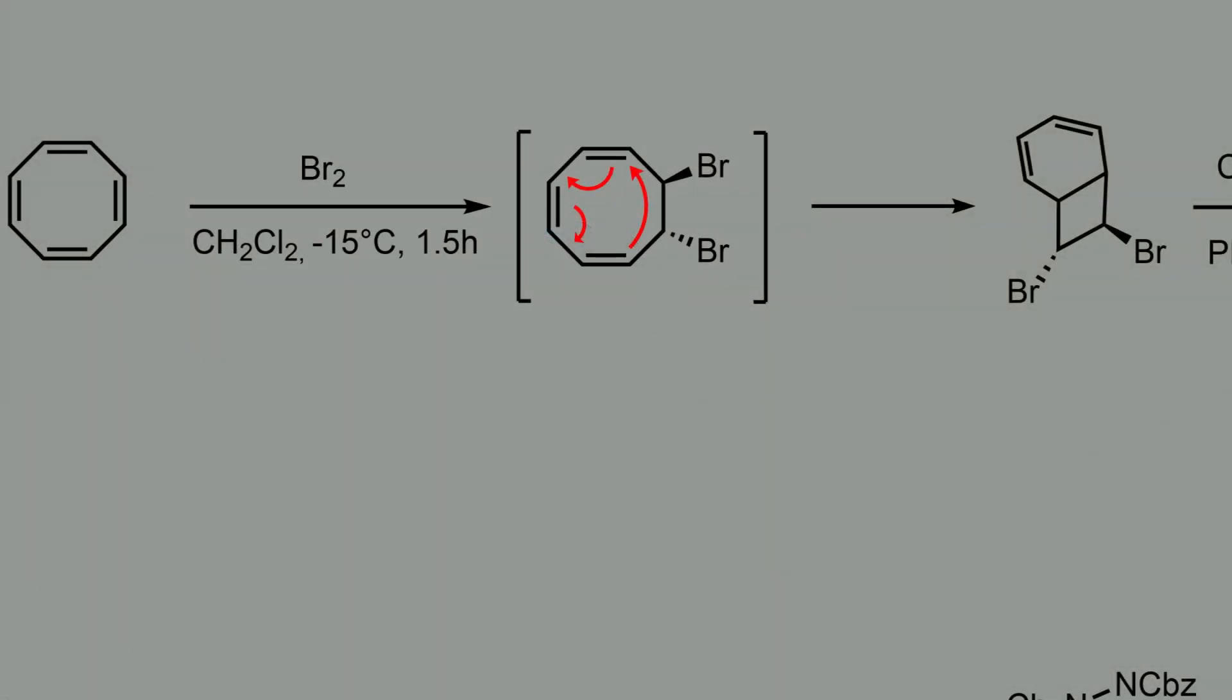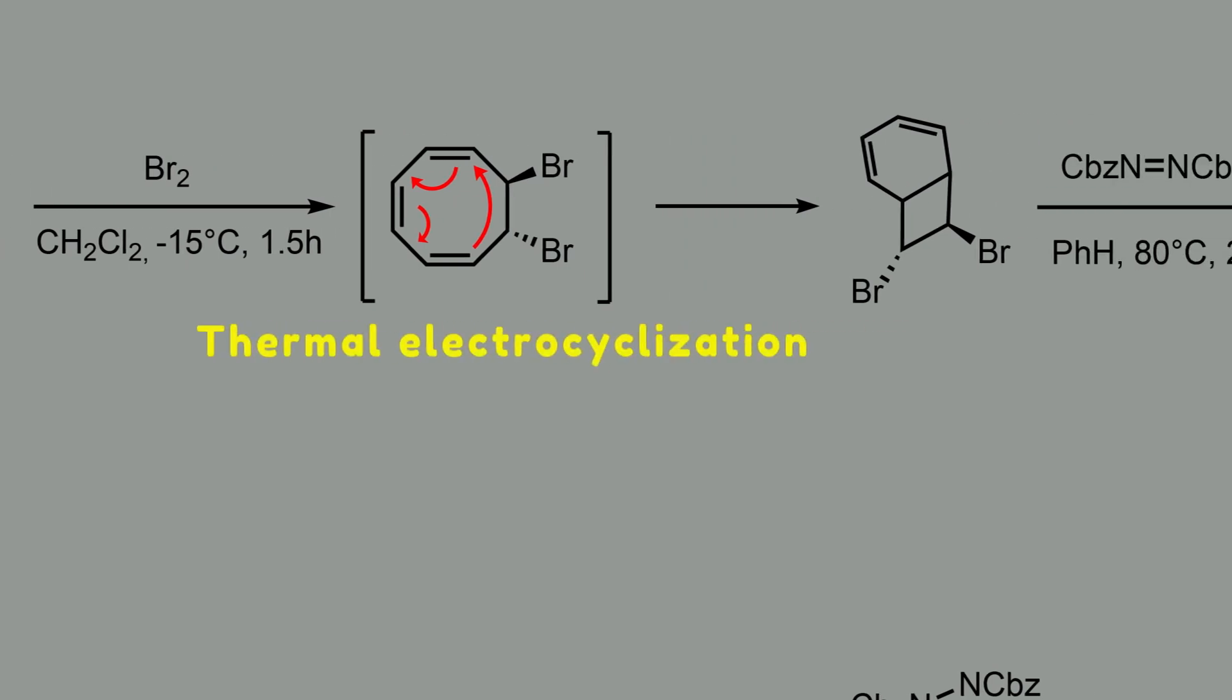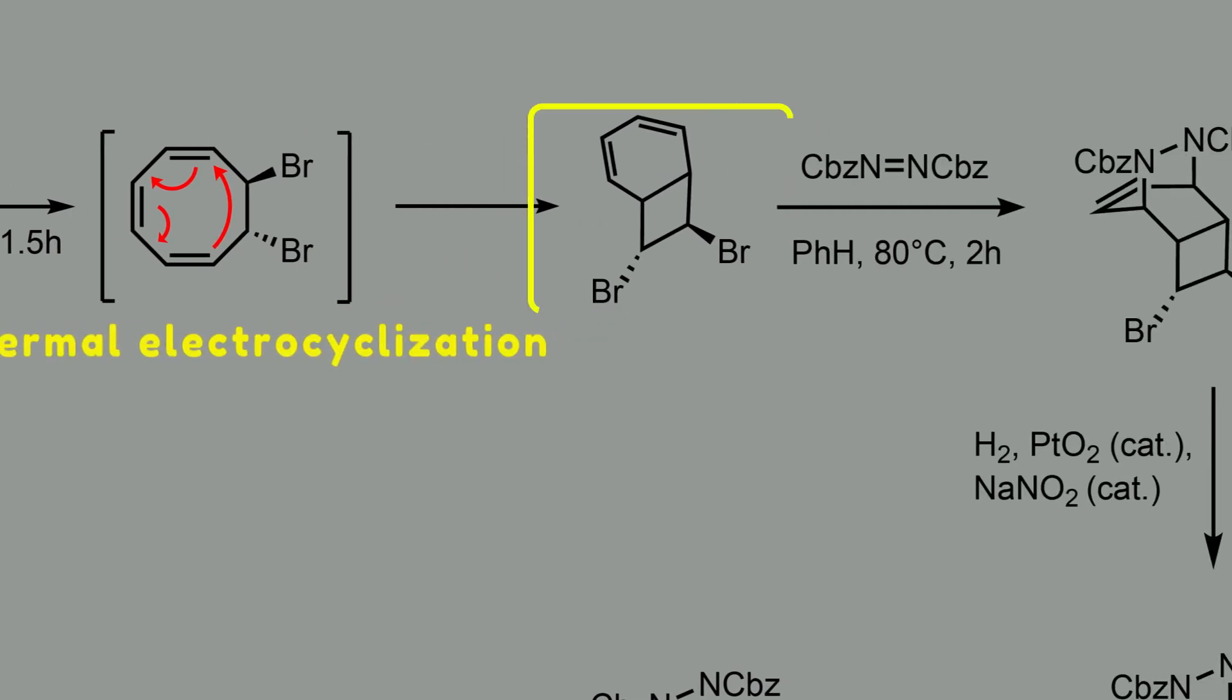Bromination of cyclooctatetraene with bromine gives this intermediate in which the orbital overlap of the triene moiety becomes energetically favorable, and the enhanced overlap triggers the subsequent thermal electrocyclization, which produces this intermediate. This compound consists of a diene moiety which is fused to the cyclobutene ring.